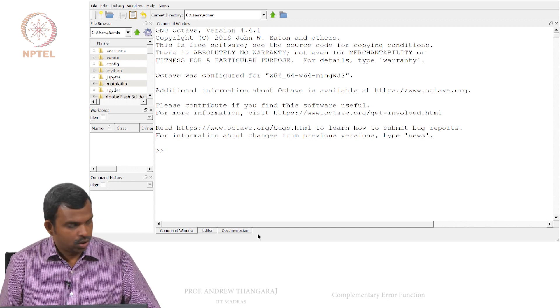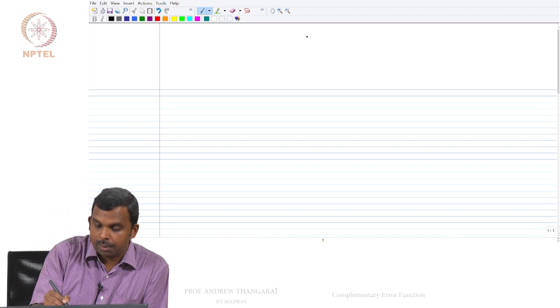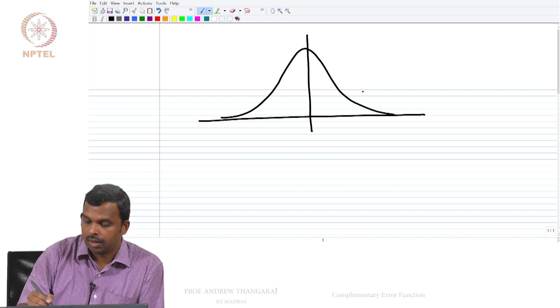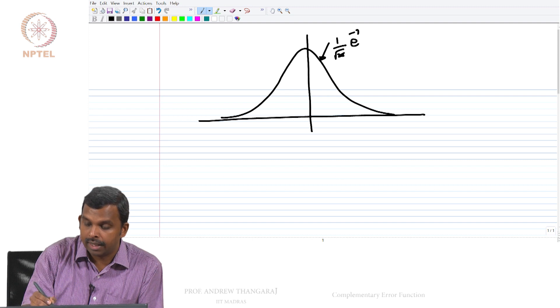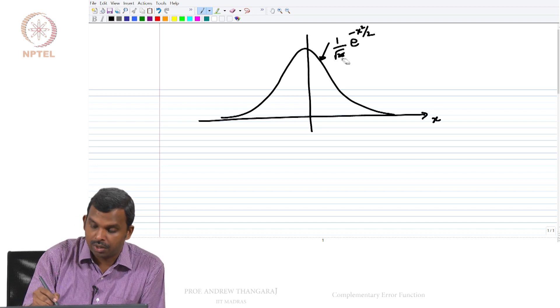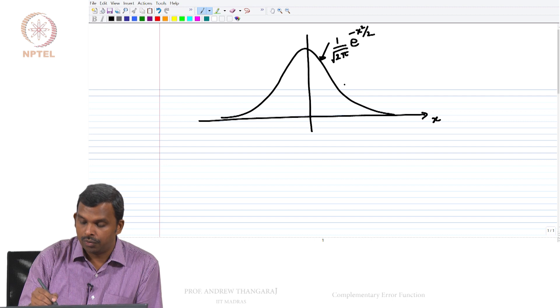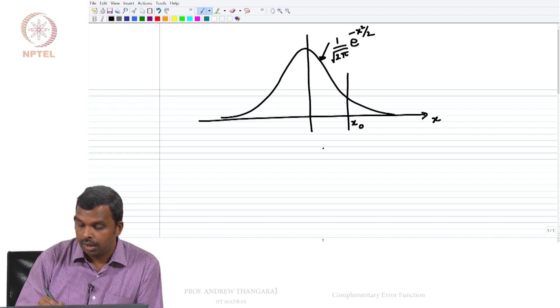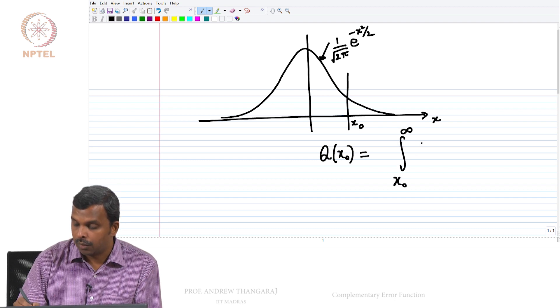The first thing I want to say is about this Q function. Let me say a few words about what this Q function is. You have this Gaussian integral, and this is the Gaussian PDF which is 1 by root 2π e^(-x²/2). So this is the 0 mean variance 1 Gaussian PDF. And if you fix a point like say x0, Q of x0 is defined as integral from x0 to infinity of this function, 1 by root 2π e^(-x²/2) dx.